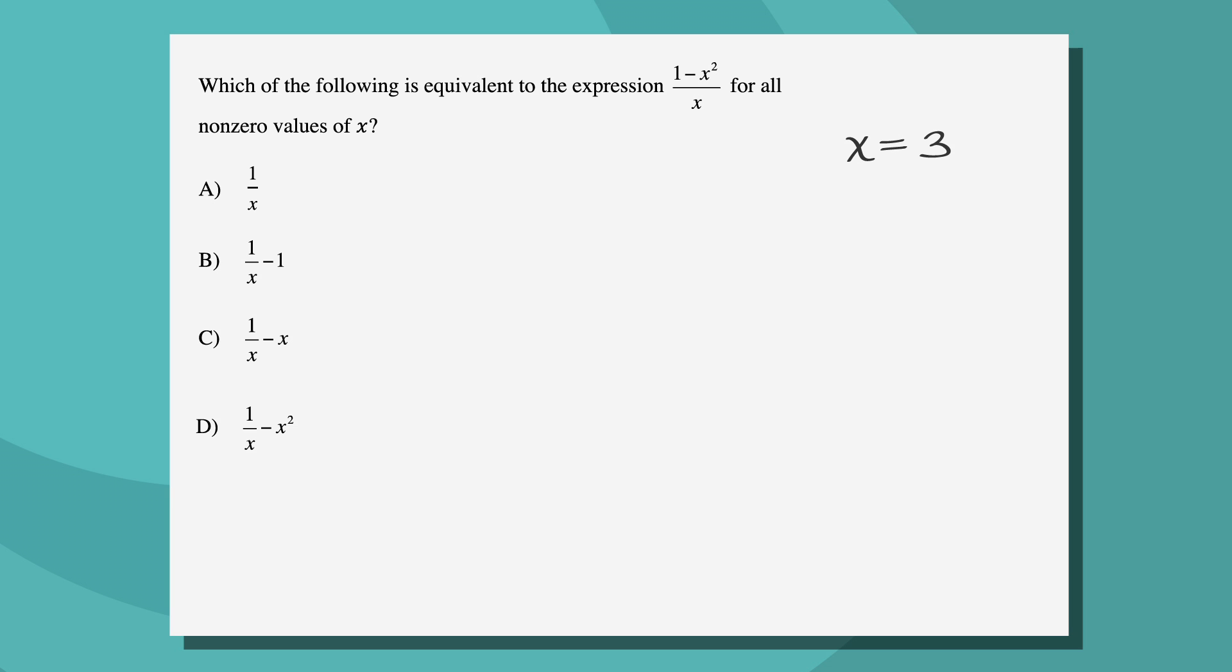We then want to plug in the number we picked and solve for any other variables we're given. The expression given in the question 1 minus x squared over x becomes 1 minus 3 squared over 3, or 1 minus 9 over 3. Doing the subtraction, we have negative 8 thirds.